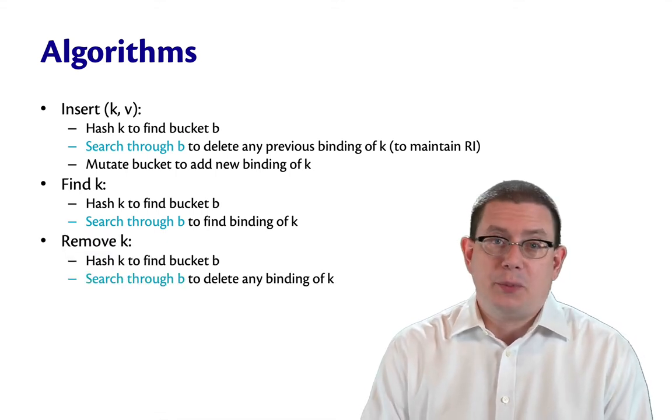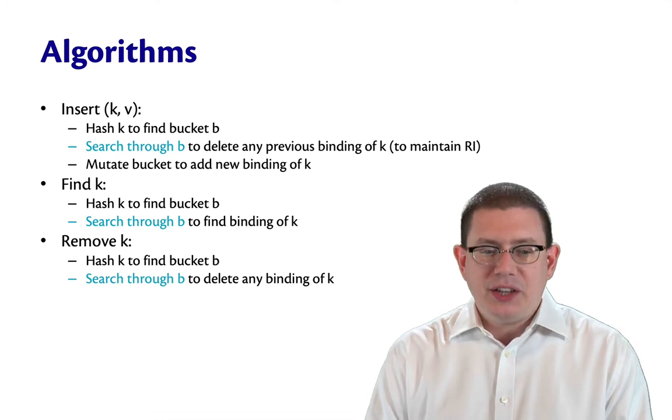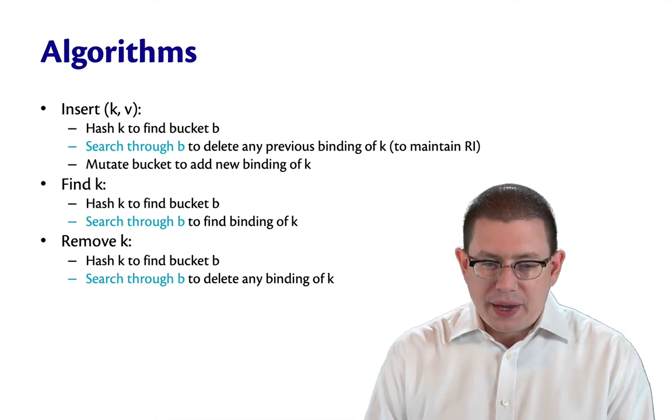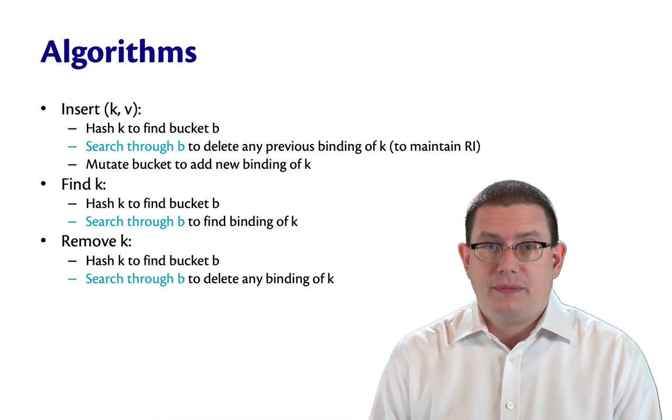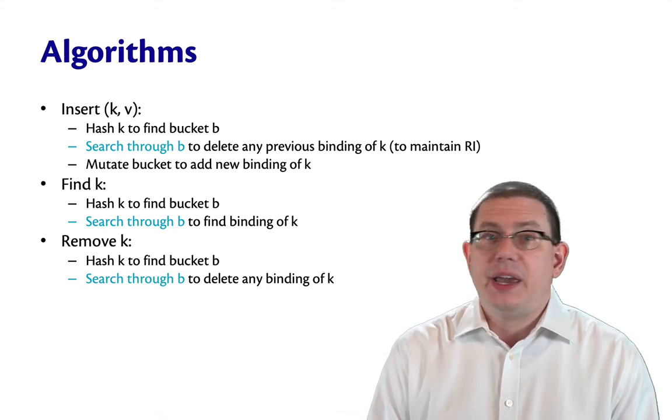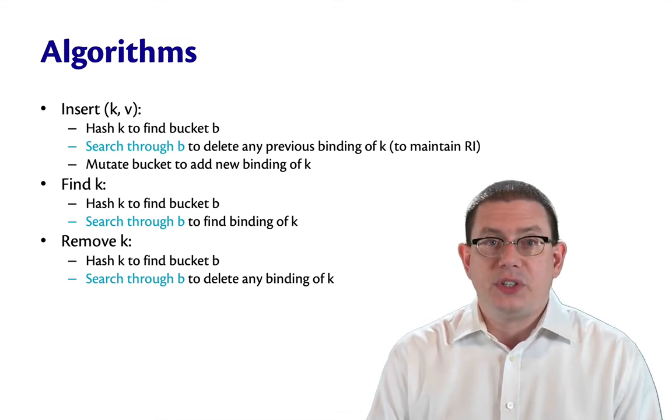The remove operation is similar to the other two. Hash the key to the bucket and search through the bucket to delete any binding of the key. Of course, once we find one, we're done because there can't be a second binding of it by our representation.